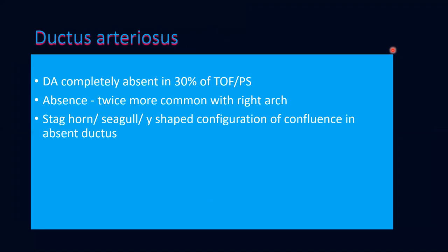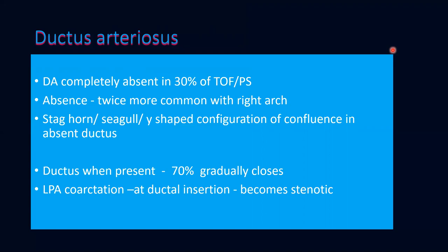When the ductus is absent, it gives a characteristic staghorn, seagull, or Y-shaped configuration to the pulmonary confluence. When present, in 70% it gradually closes off, which can lead to LPA coarctation — a stenosis at the ductus insertion site — or the LPA can be entirely disconnected from the main pulmonary artery and continue from the ductus.